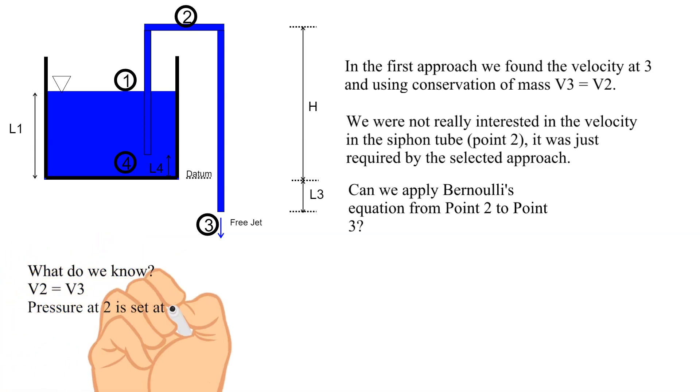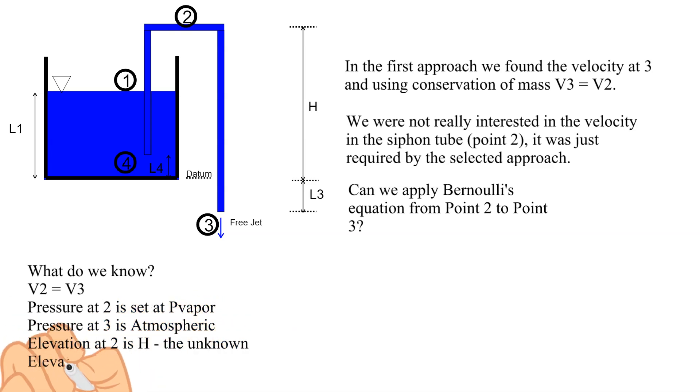What do we know? V2 equals V3 from continuity. Pressure at 2 is set at vapor pressure. Pressure at 3 is atmospheric pressure. Elevation at 2 is h, the unknown. Elevation at 3 is known.